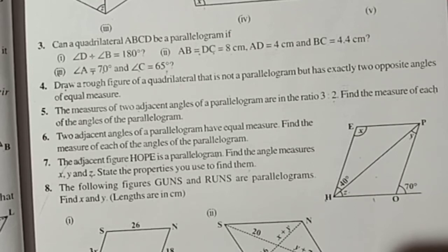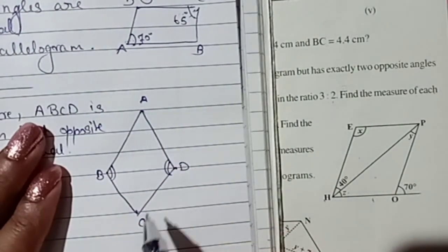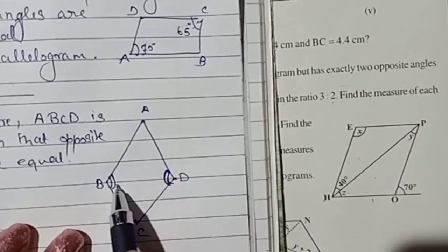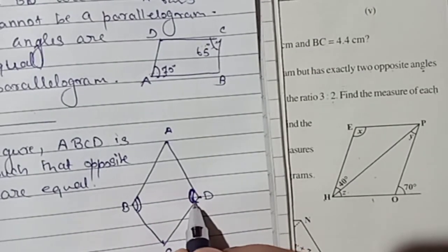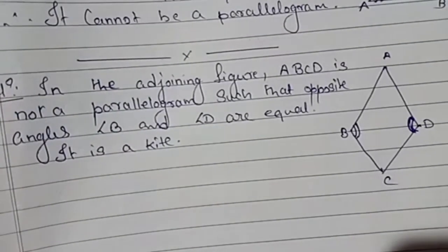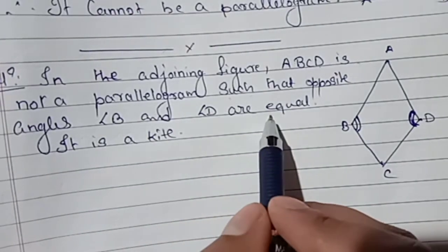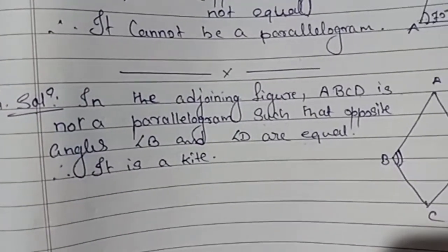It is a kite. I have already explained and told you to go through the properties from the last page of this chapter. So it is a kite. In the diagram of a kite, this angle and this angle are always equal. By looking at the question, exactly two opposite angles are of equal measure means angle B equals angle D. In the adjoining figure ABCD is not a parallelogram such that opposite angles B and D are equal. Therefore it is a kite. This is the solution number 4.